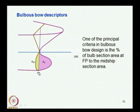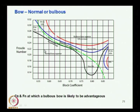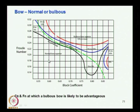This diagram gives an indication of how to identify whether a bulb needs to be provided and whether the bulb will have an advantage. The provision of a bulb largely depends on the fullness of the vessel and also the Froude number of its operation. The bulb is going to be effective only for a small speed range.